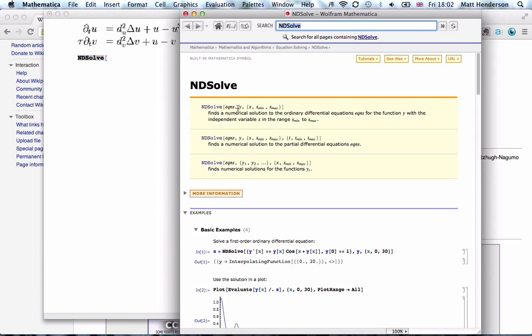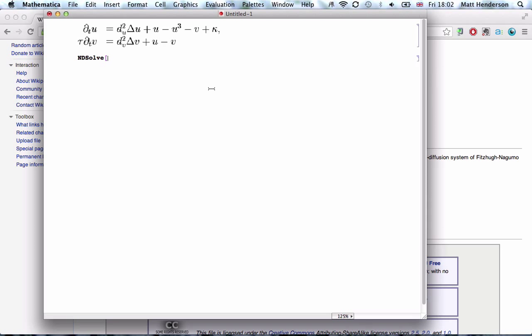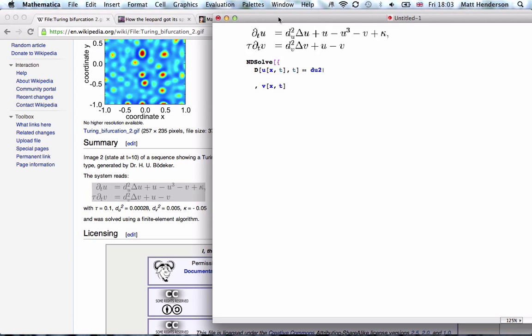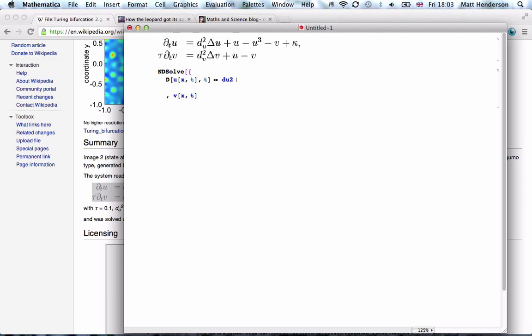Now we have two functions, u which is a function of x and t, and v which is also a function of x and t. Now the top equation is the derivative of u with respect to t equals du squared, which we'll just call du2 because I noticed they just give a value of du squared in the Wikipedia article. So we won't call it du and n squared, we'll just call it du2 times this, which is del squared. In one dimension it's just a second derivative.